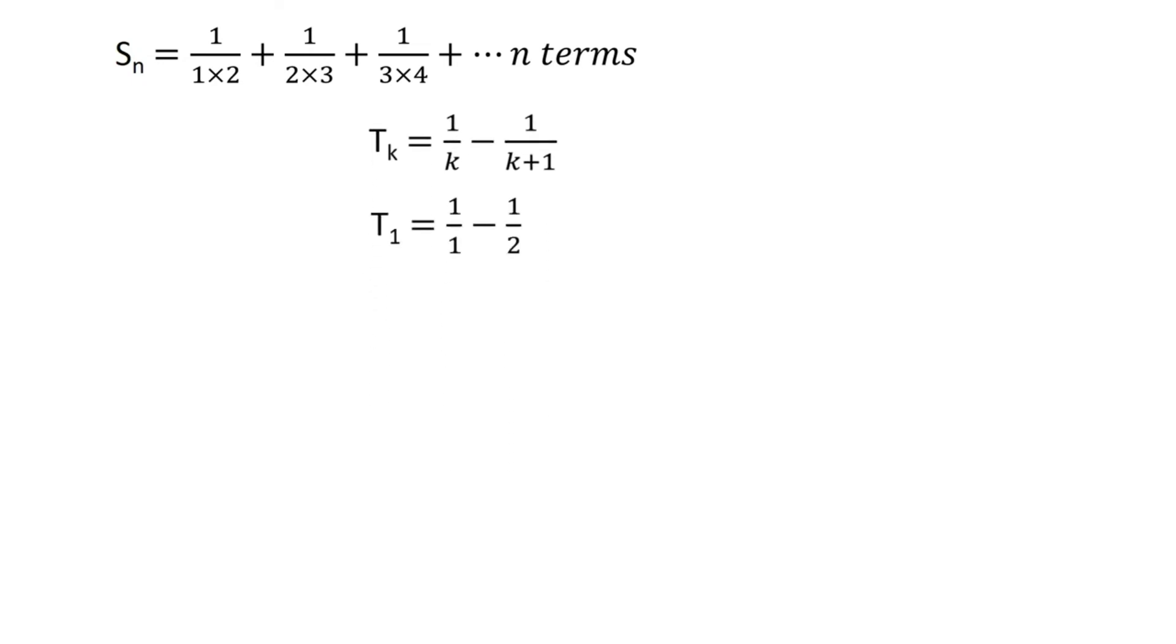Therefore, we can write T1 equals 1 upon 1 minus 1 upon 2. Similarly, T2 equals 1 upon 2 minus 1 upon 3, T3 equals 1 upon 3 minus 1 upon 4, and so on. Tn equals 1 upon n minus 1 upon n plus 1.